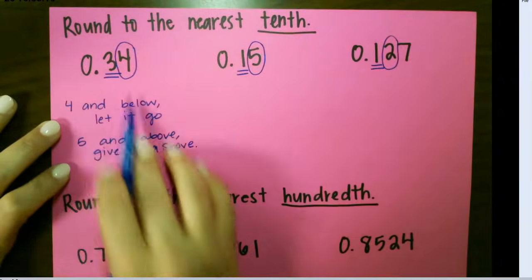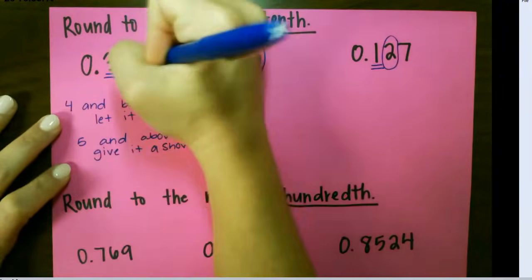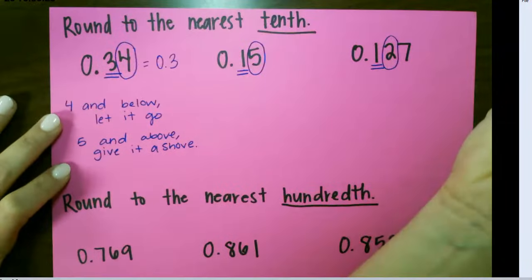So on our first one, since it's four and below, we just round this to 0.3 or 0 and 3 tenths.